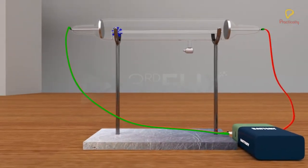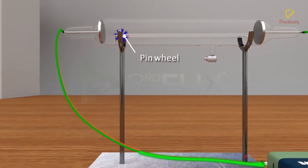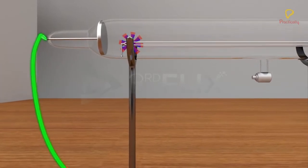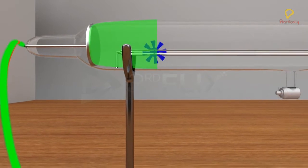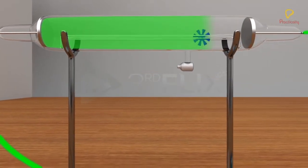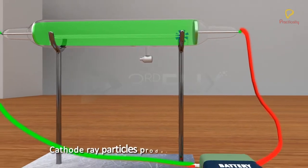In one of his experiments, a pinwheel was found to rotate when placed in the path of cathode rays. This helped him conclude that cathode rays are made of particles that produce mechanical motion.